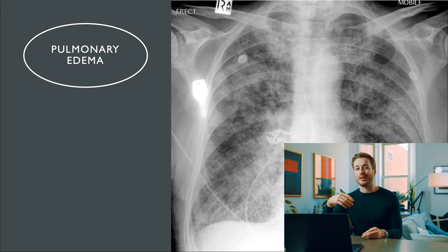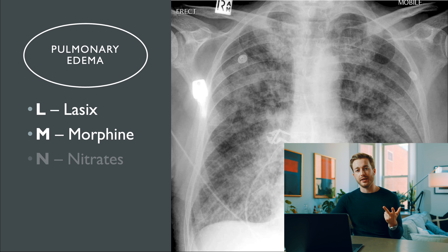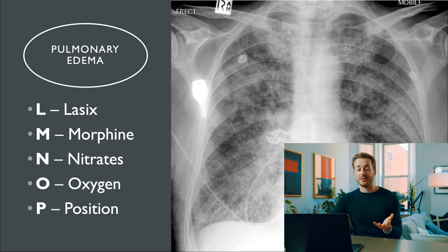Mnemonic number six covers treatments for pulmonary edema: LMNOP — Lasix, morphine, nitrates, oxygen, and position. You can see on this x-ray a good amount of edema in the lung fields, and treating this with Lasix would be pretty important.